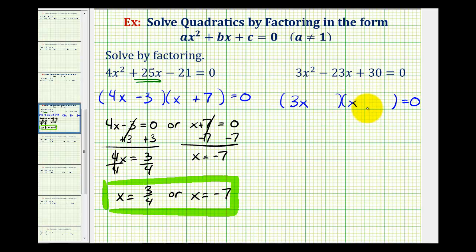And now the second terms of the binomial factors must come from the factors of positive 30, so that the sum of the inner product and outer product now is equal to negative 23x. And since this sum is negative, we'll have to use the negative factors of positive 30.